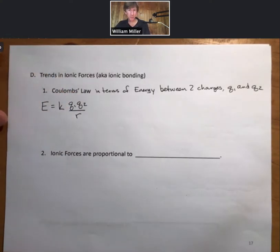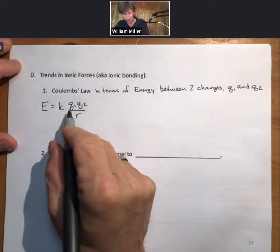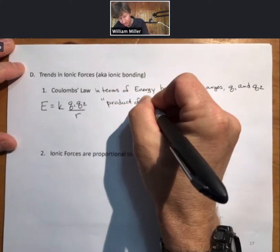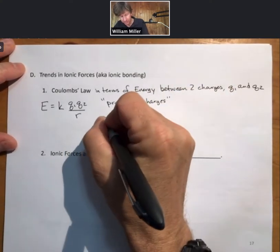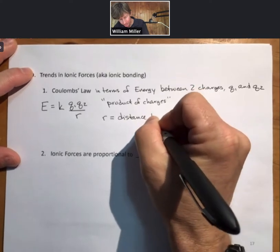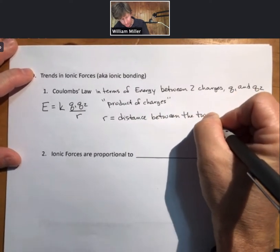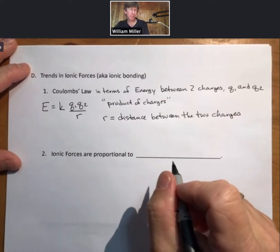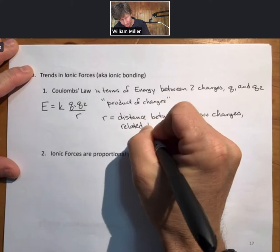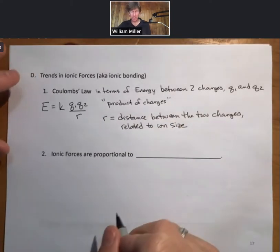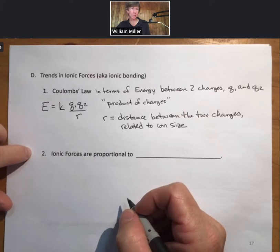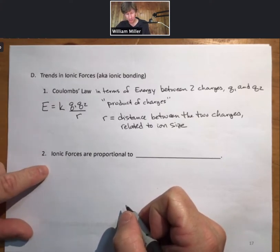The equation goes like this. The E, the energy between two charges, is equal to a proportionality constant K times Q1 times Q2. And so we're going to talk about the product of charges. Those are two things multiplied together. So our charges are here, and there is a product of charges. R is going to be the distance between the two charges.